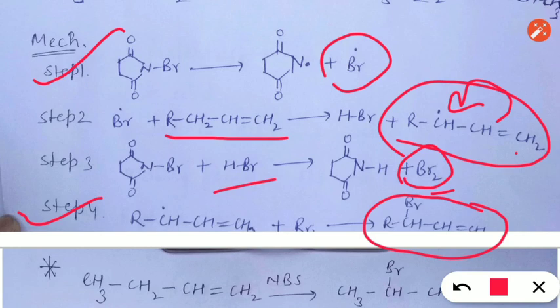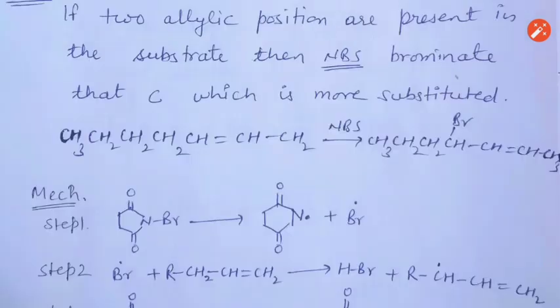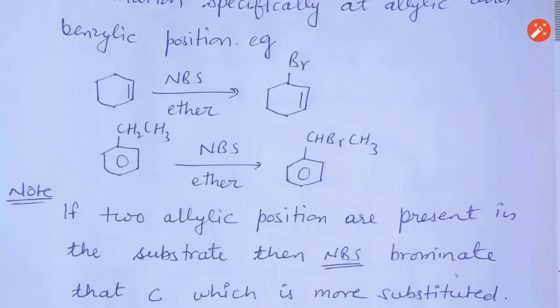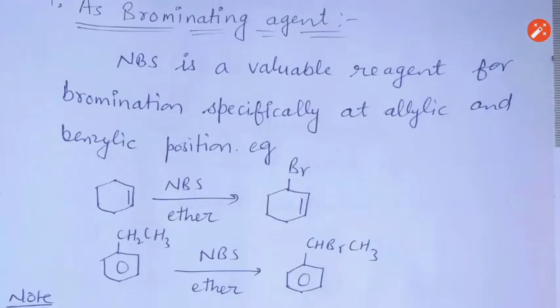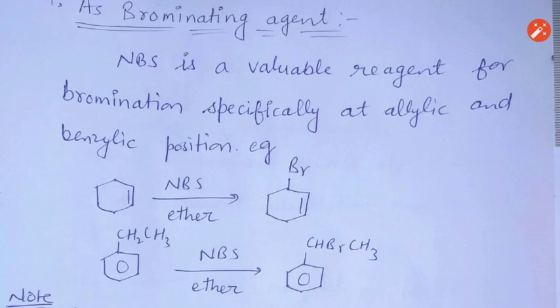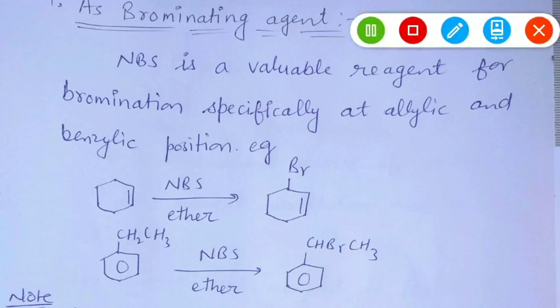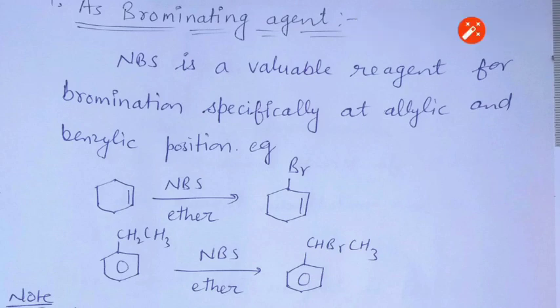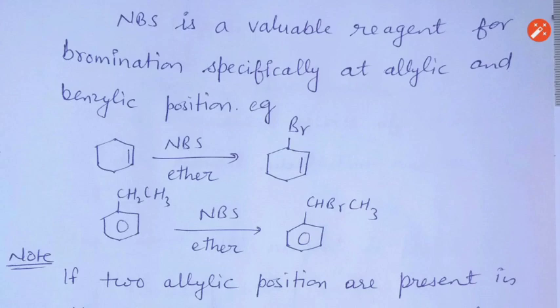The product is the bromo derivative of the allylic system. We can conclude that bromination with N-Bromosuccinimide generally occurs at allylic and benzylic positions because allylic and benzylic radicals are both highly stable due to resonance.